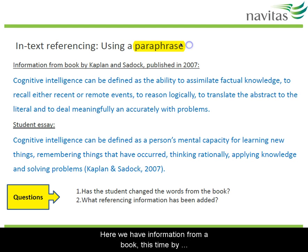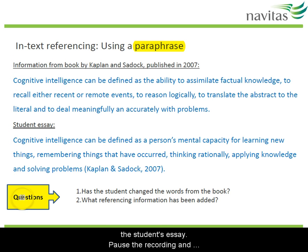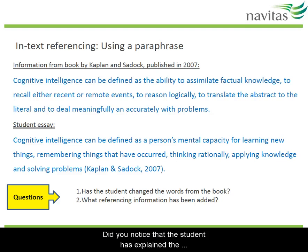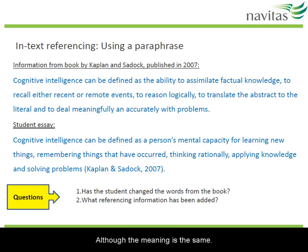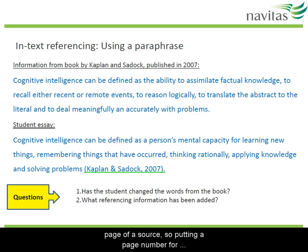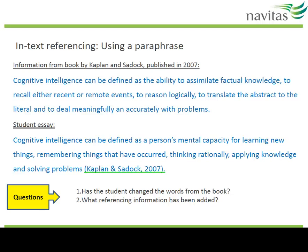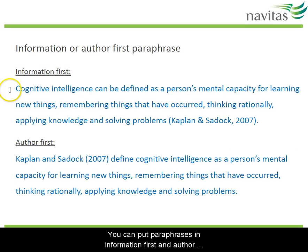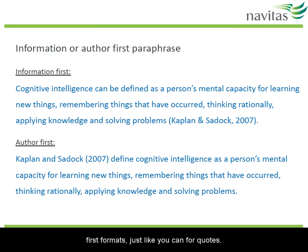Here we have information from a book, this time by Kaplan and Sadek, then another segment from the student's essay. Pause the recording and think about these questions. Did you notice that the student has explained the information in their own way, in their own words, although the meaning is the same? That's paraphrasing. The referencing information is the author's surnames and the year of publication — no page number and no quotation marks. Paraphrases are often summaries of more than one page of a source, so putting a page number for paraphrases is not as helpful as for quotes. You can put paraphrases in information-first and author-first formats, just like you can for quotes.